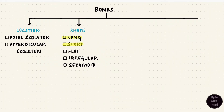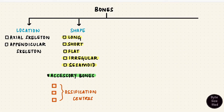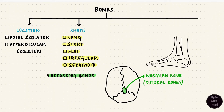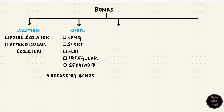So that's long, short, flat, irregular, and sesamoid bones. In addition to these, there can be accessory bones — supernumerary bones. Bones form from ossification centers that unite, but if a bone that develops from an ossification center doesn't unite with the rest of the bone, it remains as an accessory bone. An example is the Wormian bones in the skull, also called sutural bones. Another example is the os trigonum, which is the lateral tubercle of the talus.